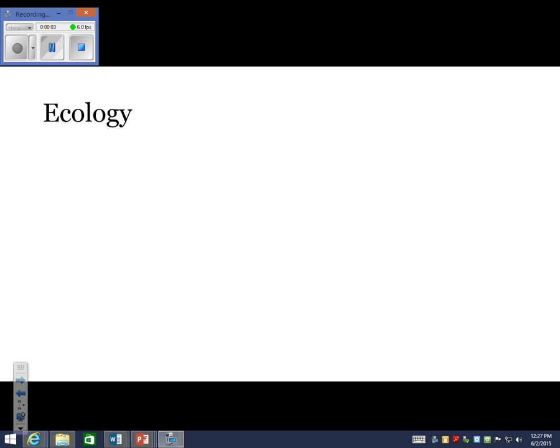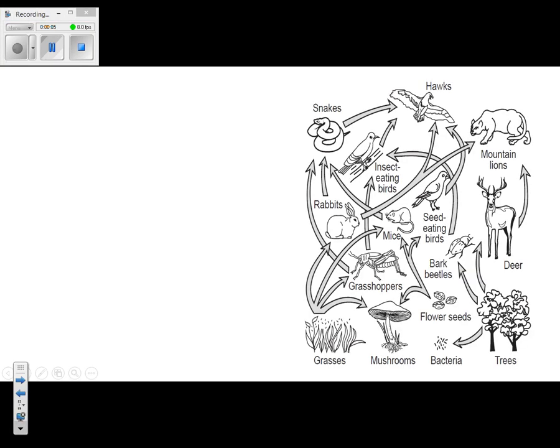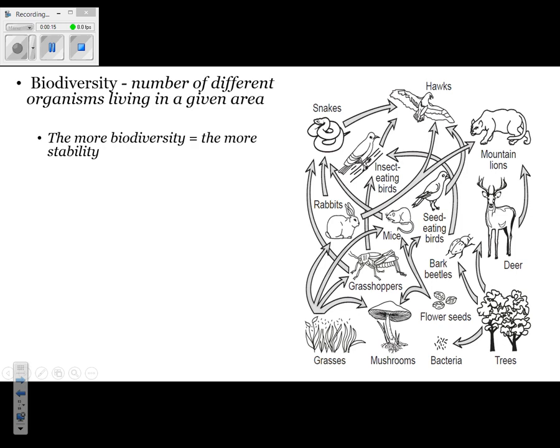Our next topic is ecology. The first thing we're going to talk about is biodiversity. Biodiversity is the number of different organisms living in a given ecosystem. Biodiversity is important because the more organisms you have living in an ecosystem, the more stability you have. If one organism dies off, the organism that eats it probably has another source for food.